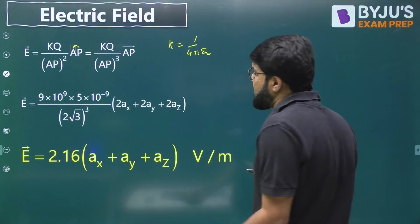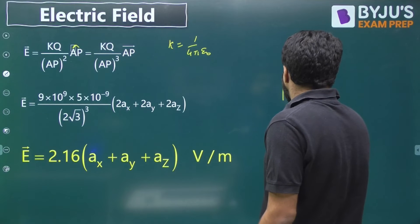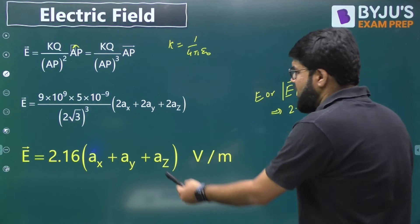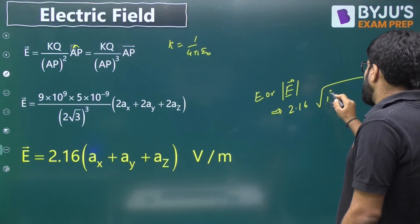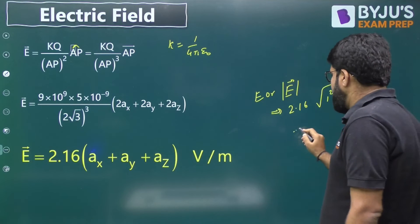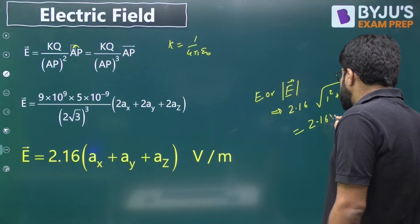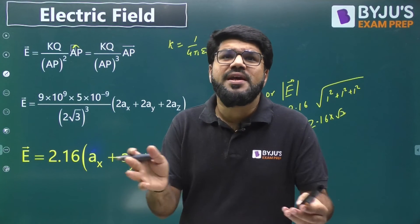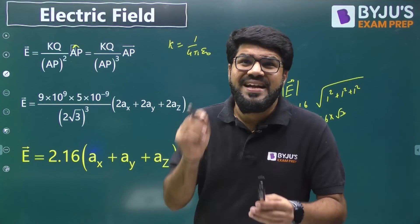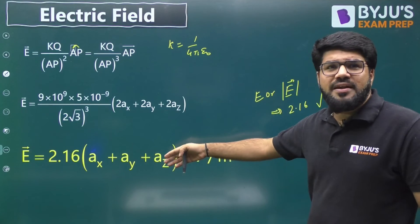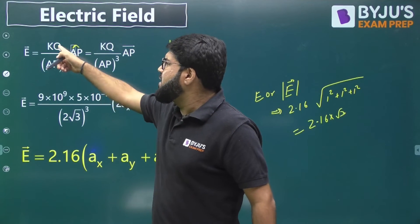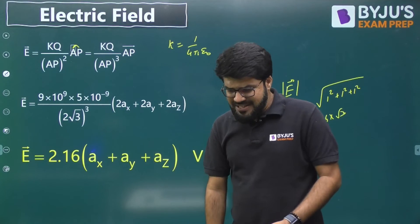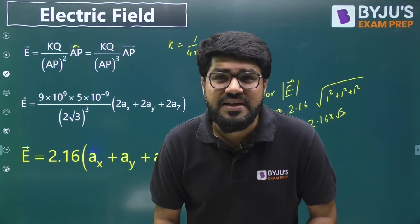If they ask for the electric field intensity as a vector, the answer is 2.16(ax + ay + az) Volt per meter. If they only ask for the magnitude, you calculate 2.16 times the square root of (1² + 1² + 1²), which is 2.16 multiplied by root 3. But if they are only asking for the magnitude, you need not go to the vector formula — you can directly calculate using E = KQ by R square. It depends on what they are asking in the question.